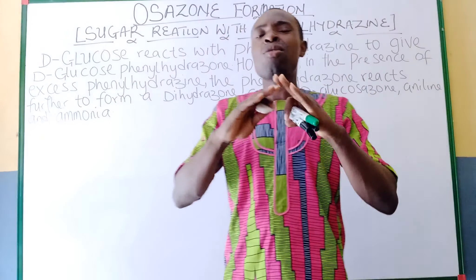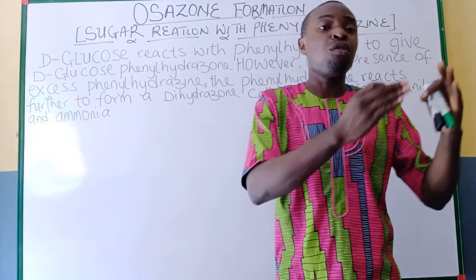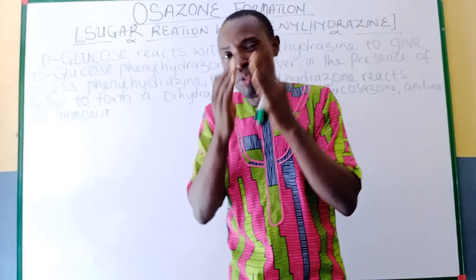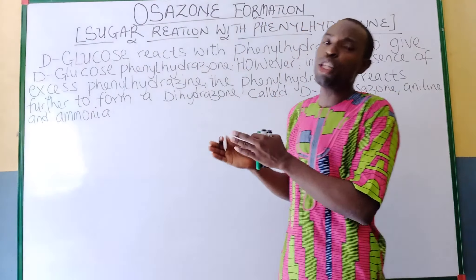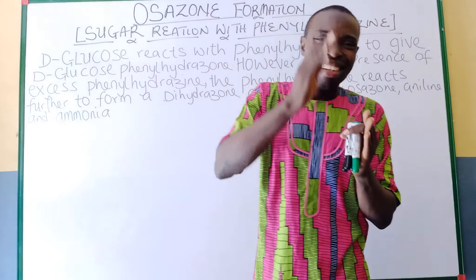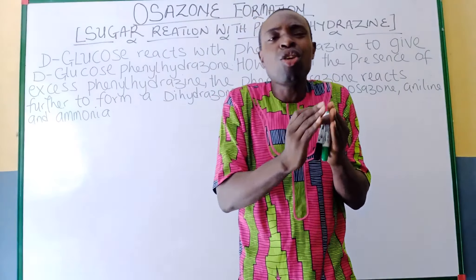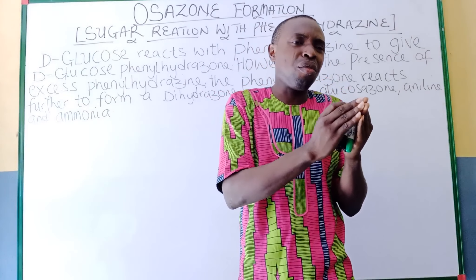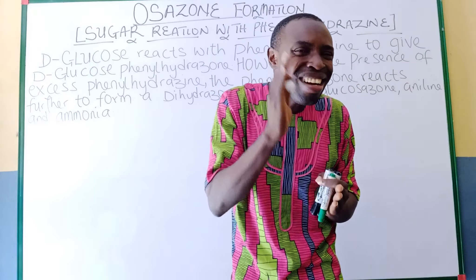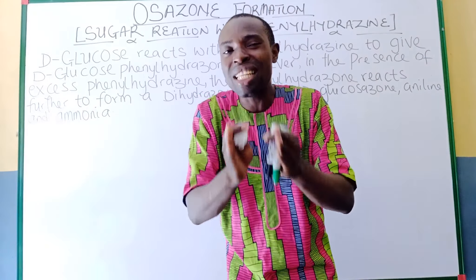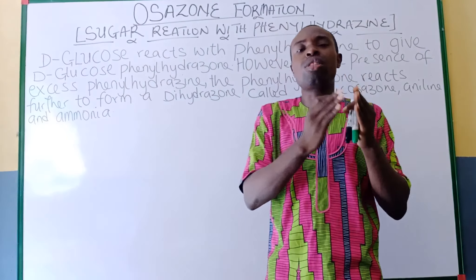In osazone formation, we will talk about the reaction of sugar with phenylhydrazine to give us the product. Take note: we are making use of monosaccharides. In the reaction of the sugar with phenylhydrazine, take note, three molecules of phenylhydrazine are utilized, and it is carried out in two steps.